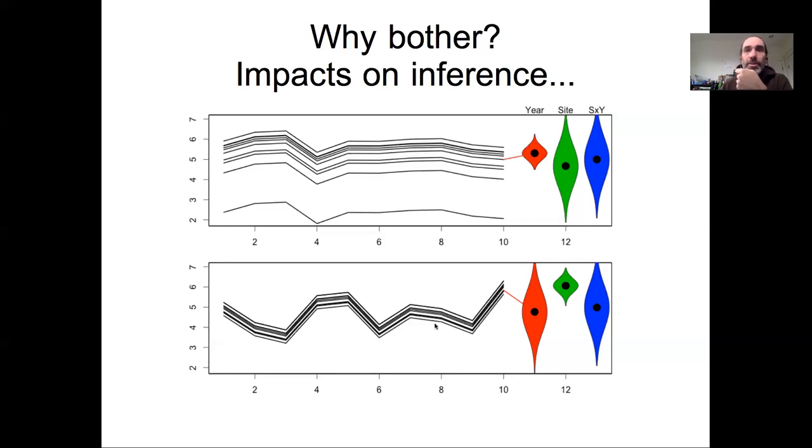By contrast, in the lower time series where most of the variability is year to year, if I'm in the fourth site and make a prediction to a new year, I don't have much confidence. But if I'm in the 10th year and make a prediction to a new site, say site 11, I would actually be able to make a very confident prediction to that new site. Then again, a new site and new year are now identical. We can see that these predictions to a new site or new year could be very different depending on how we partition that variability, even if we don't know why the years are different or why the sites were different.